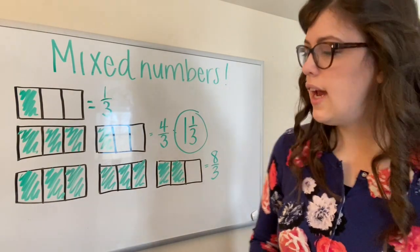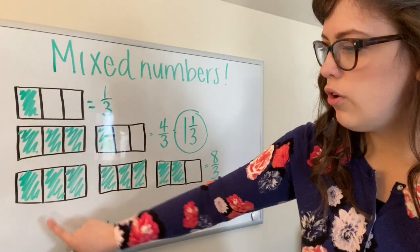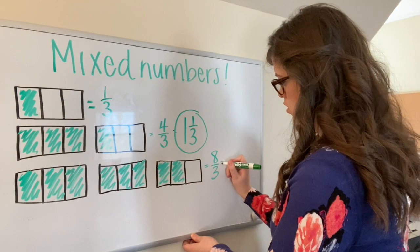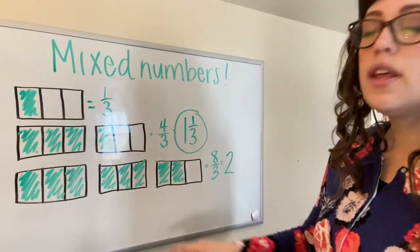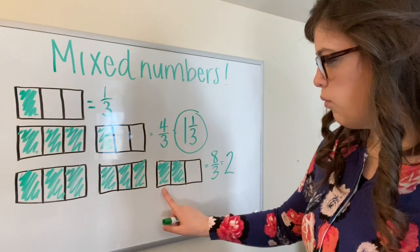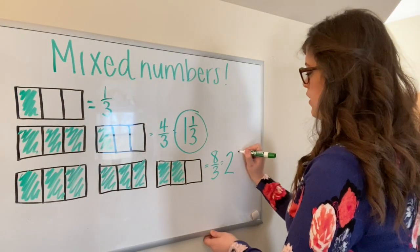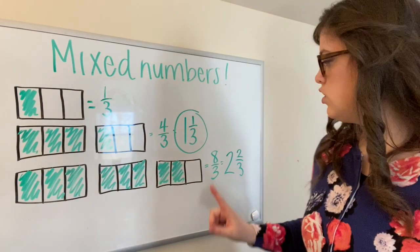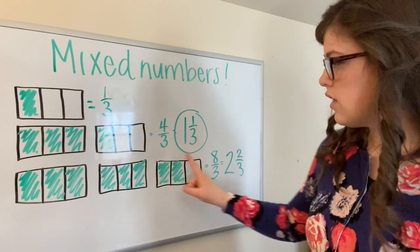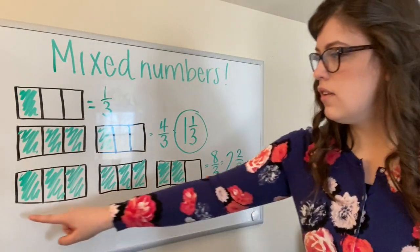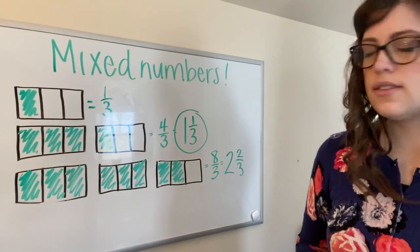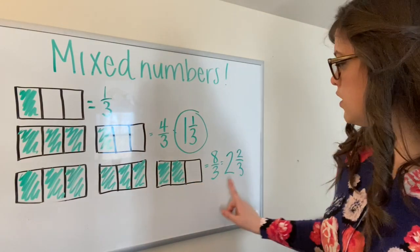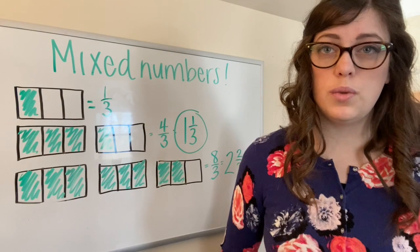First, I'm going to look at the number of wholes that I have. I have one whole bar here and another whole bar there. I have two wholes. And how many thirds do I have left over? I have two thirds left over. So my mixed number would be two and two thirds. I can also tell that from my diagram. I colored in two wholes and two thirds. I also colored in eight thirds. So both of these are correct. They are equal to each other.